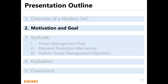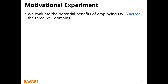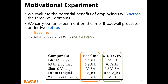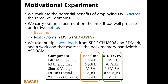I will now discuss the motivation and the goal of our work. To motivate our work, we evaluate the potential benefit of employing DVFS across the two domains. We carry out an experiment on the Intel Broadwell processor under two setups: a baseline setup and the multi-domain DVFS setup, MD-DVFS in short. In MD-DVFS, we reduce the frequency of DRAM and IO interconnect. We also reduce the shared voltage and DDR-IO digital voltage. We use multiple workloads from SPEC CPU 2006 and 3DMark, and a workload that exercises the peak bandwidth of memory. We make four observations from our motivational experiment.